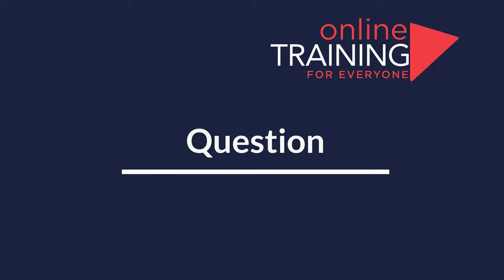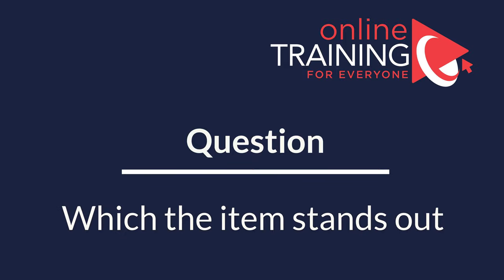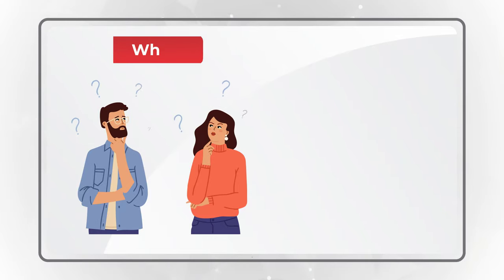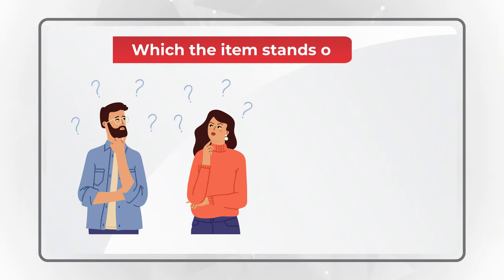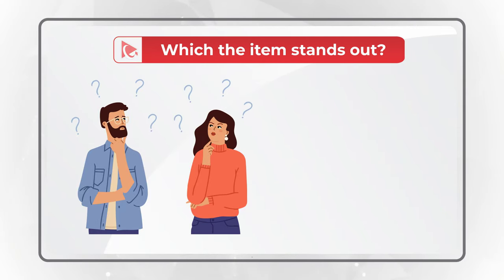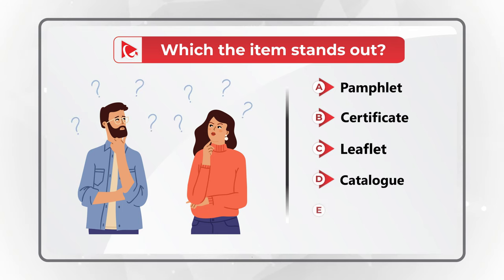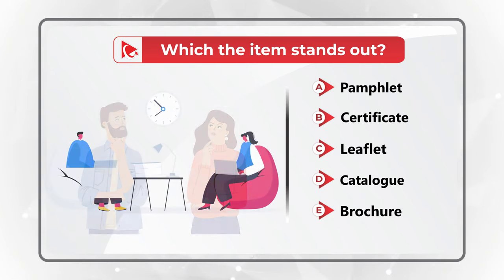Here is an interesting question which tests your knowledge of words as well as your verbal reasoning skills. You are presented with five different words, and you need to determine which item stands out. The words are: pamphlet, certificate, leaflet, catalog, and brochure. Do you see the answer? Do you know which item stands out?